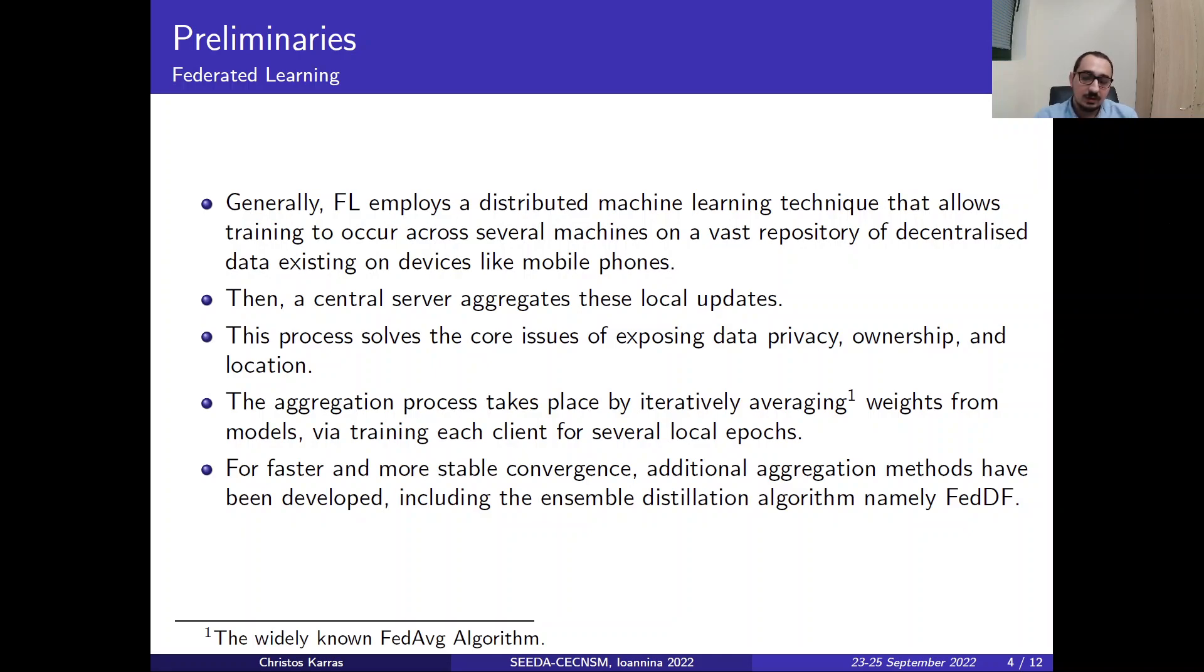Then a central server aggregates all these local updates and this process solves the issues of exposing data privacy, ownership and location. The aggregation process takes place by iteratively averaging weights from models via training each client for several local epochs. This is employed in the widely known FedAvg algorithm.